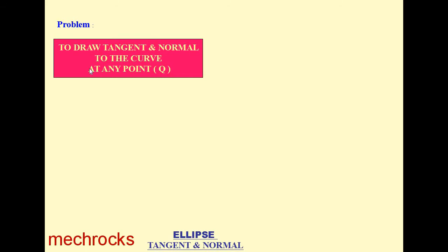We will draw the tangent and normal to the curve at any point Q on the curve. That means we will draw the tangent and normal to the ellipse at any point on the curve.